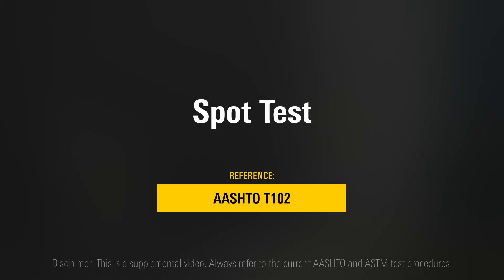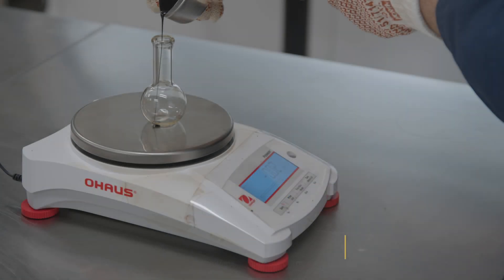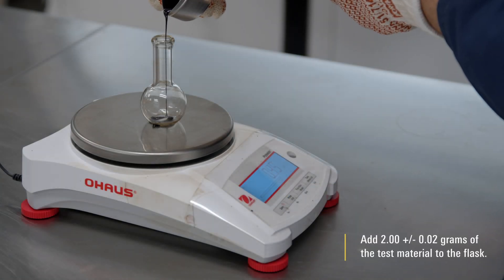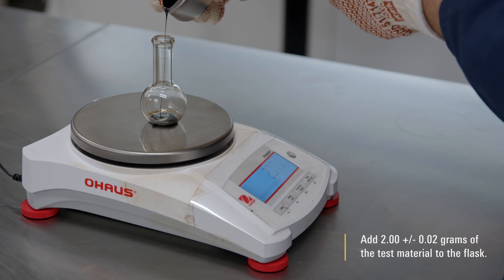Tech's 509C Spot Test. Add 2.00 plus or minus 0.02 grams of the test material to the flask.